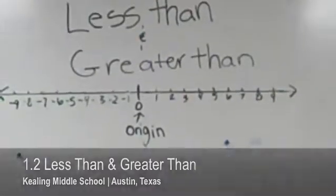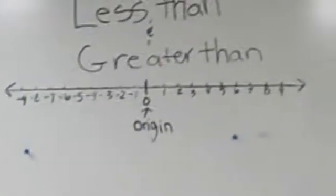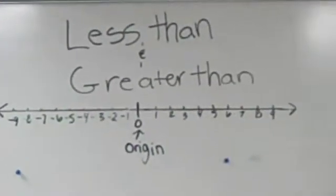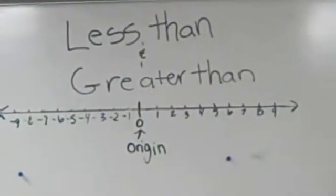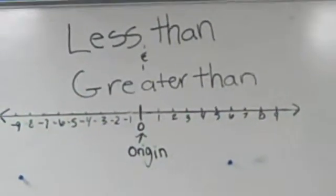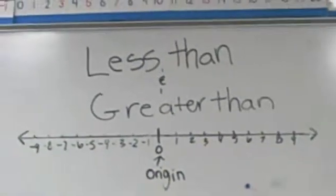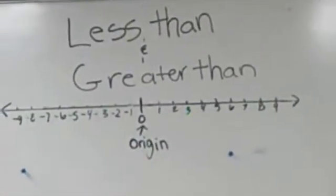Today we will be exploring less than and greater than. As you can see, this number line has its origin, it's straight, and it has arrows indicating that the line goes on.